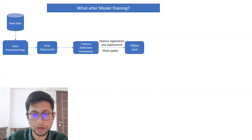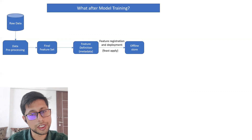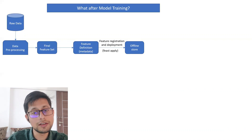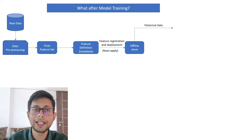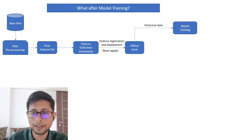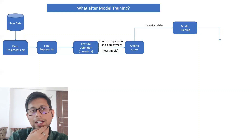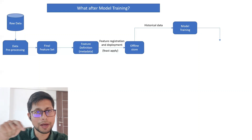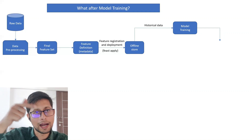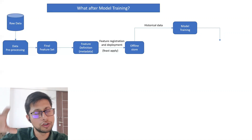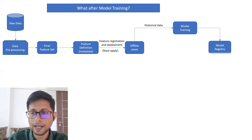Once you have the feature definition with metadata ready, you need to register and deploy those features. If you are using FEAST, there is a command — 'feast apply' — to do that. It registers the features in the offline store, from which you read historical data to train the model. During the model training phase, you also do model validation, hyperparameter tuning, and any necessary iterations on the dataset.